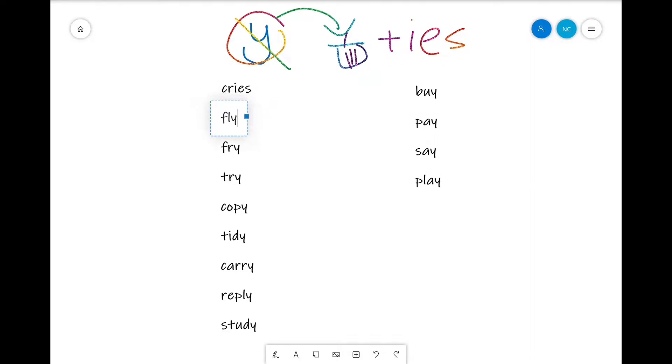Fly, throw away the y and add ies. Fry, like you're frying an egg, a cooking method, take away the y and add ies. Try, you know I always ask you to try your best, take away the y and add ies. Copy, take away the y and add ies, copies. Tidy, take away the y and add ies, tidies.